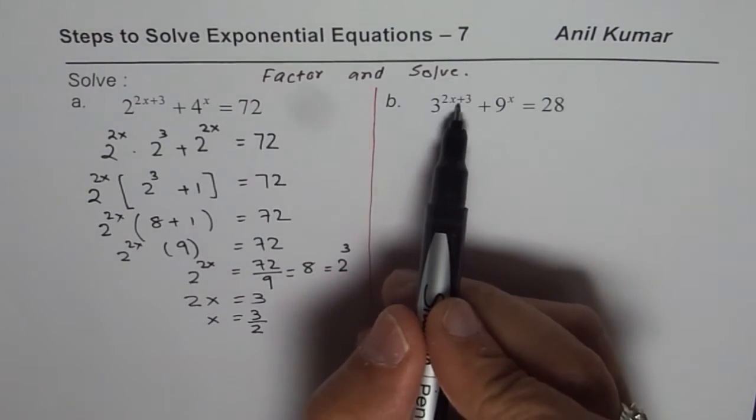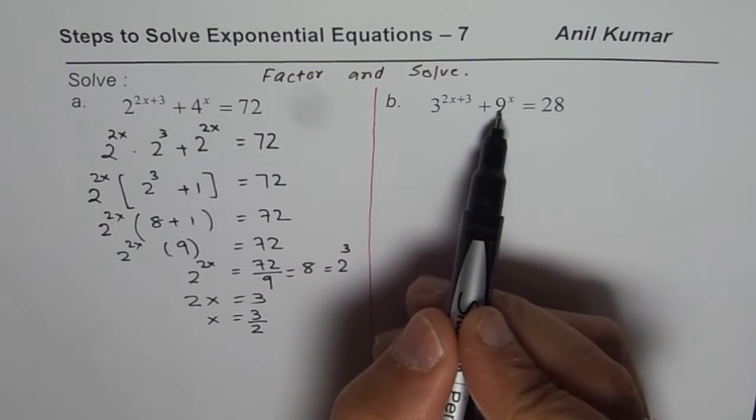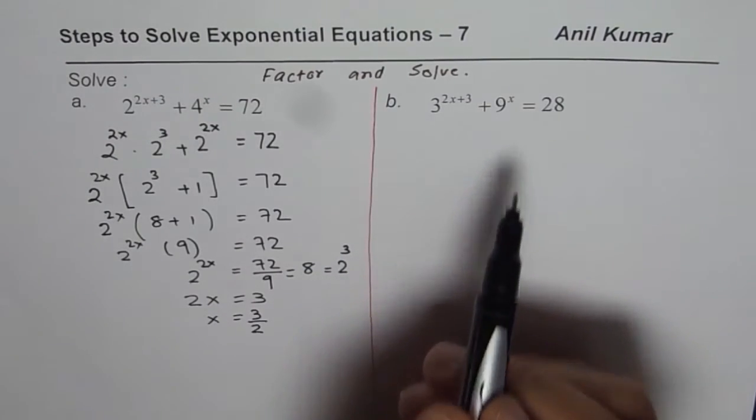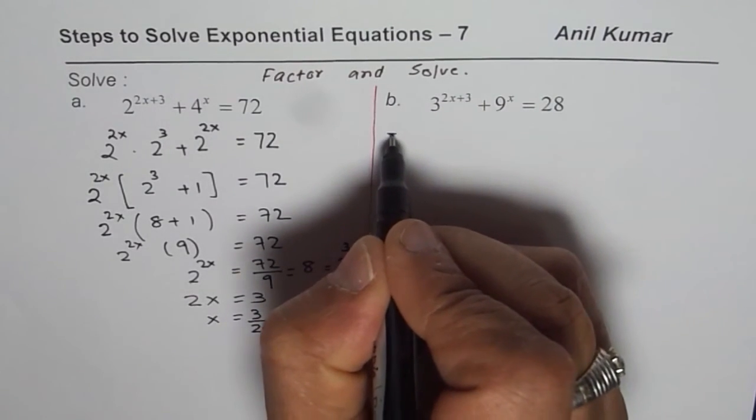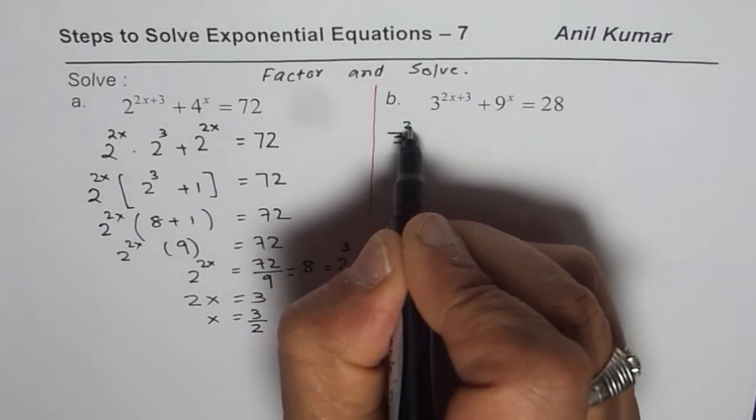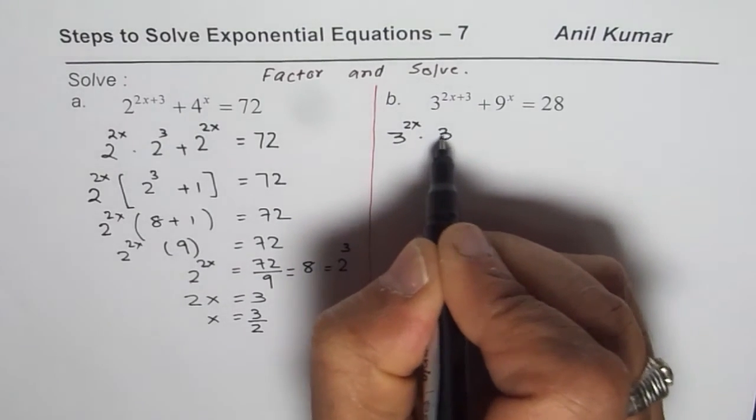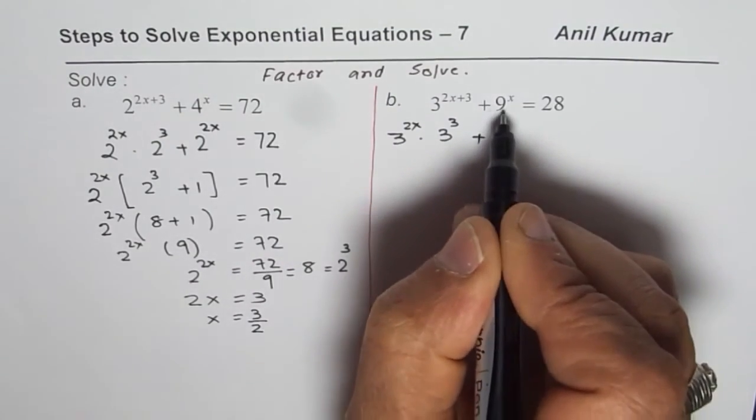We have 3 to the power of 2x plus 3 plus 9 to the power of x equals 28. Now I could write 3 to the power of 2x plus 3 as equal to 3 to the power of 2x times 3 to the power of 3.